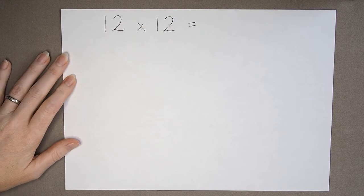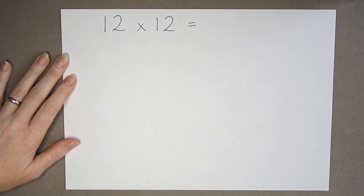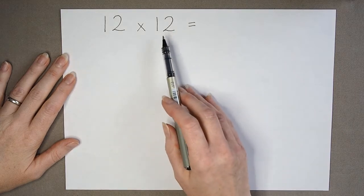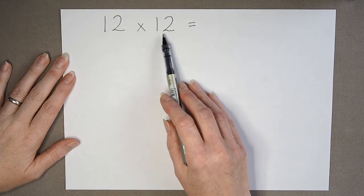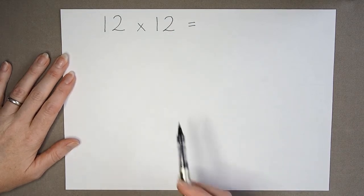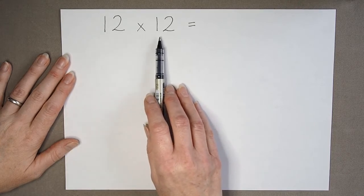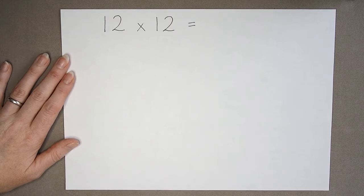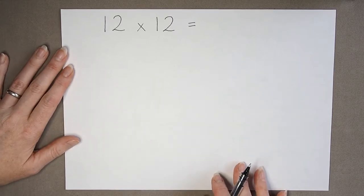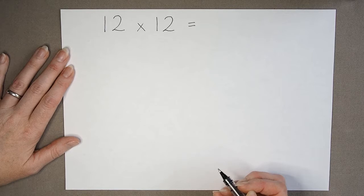We're going to look at long multiplication. Long multiplication just means we're multiplying not by a single digit anymore, but by two or more digits. So I'm going to take a calculation we probably know the answer to, 12 times 12. If we've learned our tables, that's as high as it goes, so we can see what happens in this method.